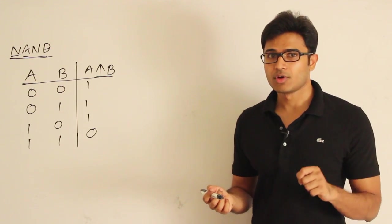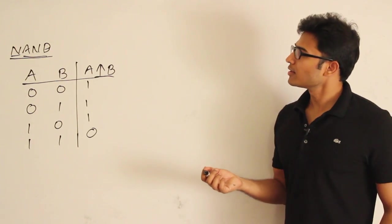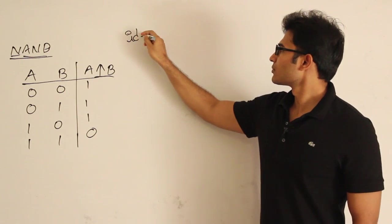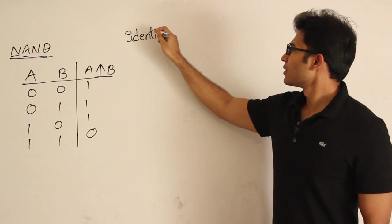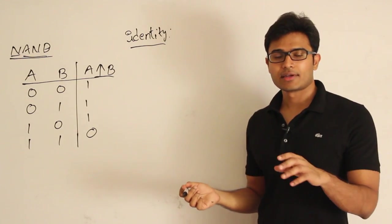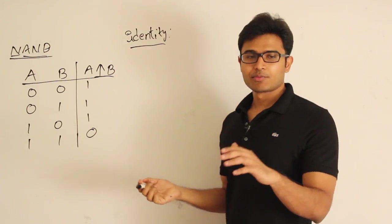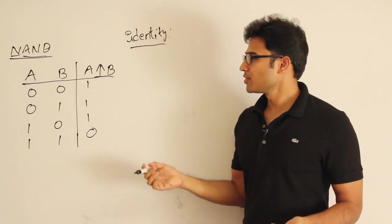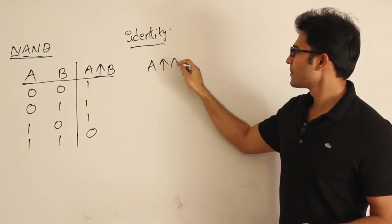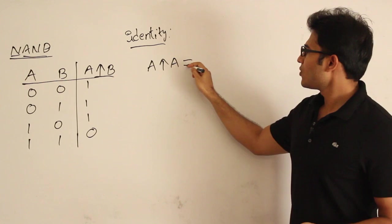Let us see whether NAND will follow identity or not. If I take two identical signals and apply them to the NAND gate, is the output produced the same? What I mean to ask is: if I have A and apply A NAND A, is the output same as A?